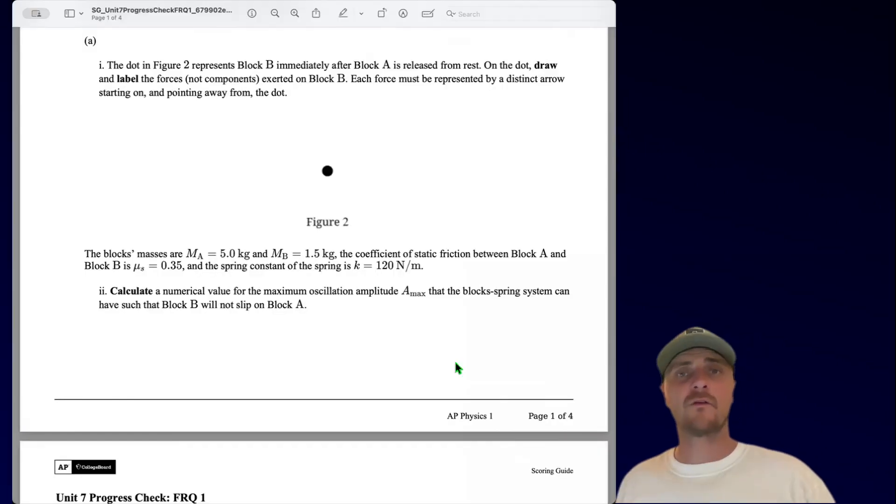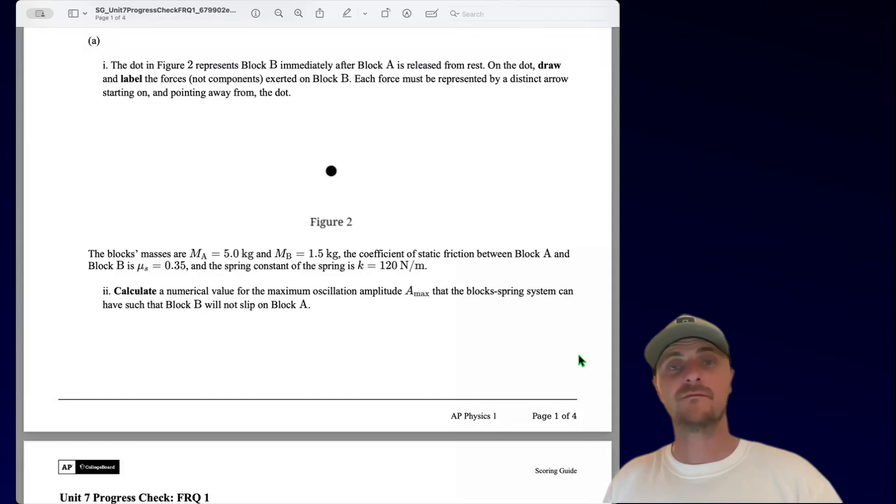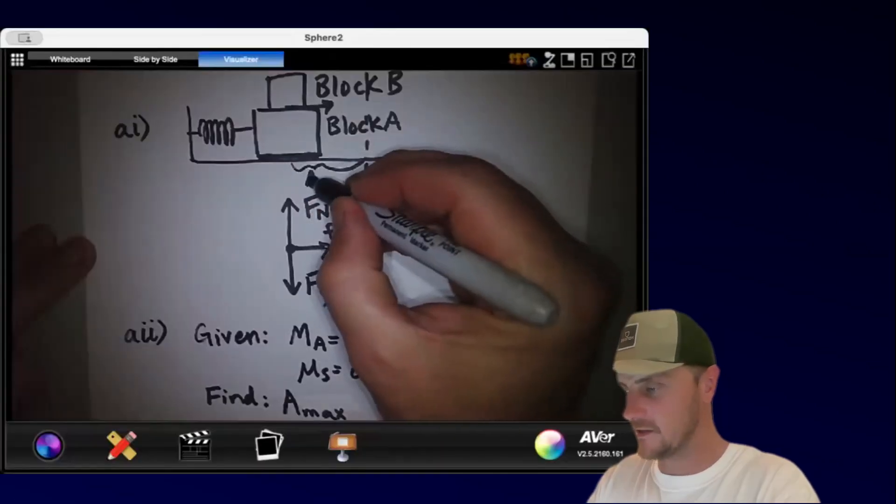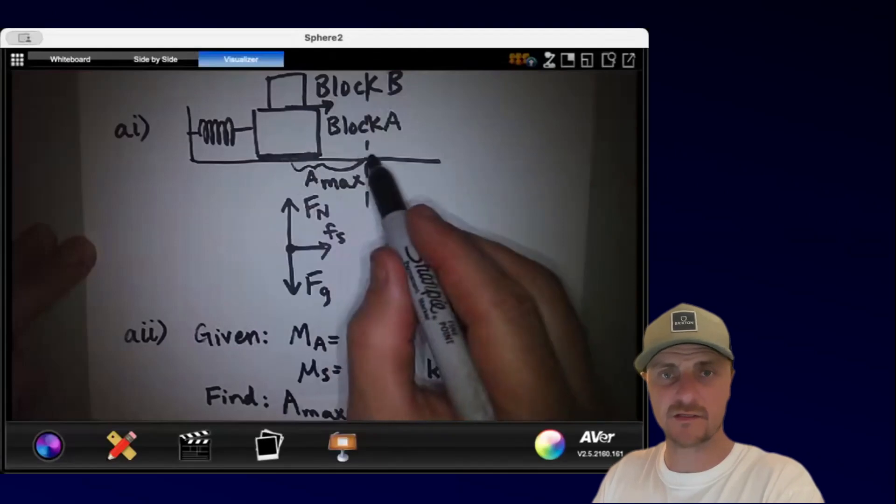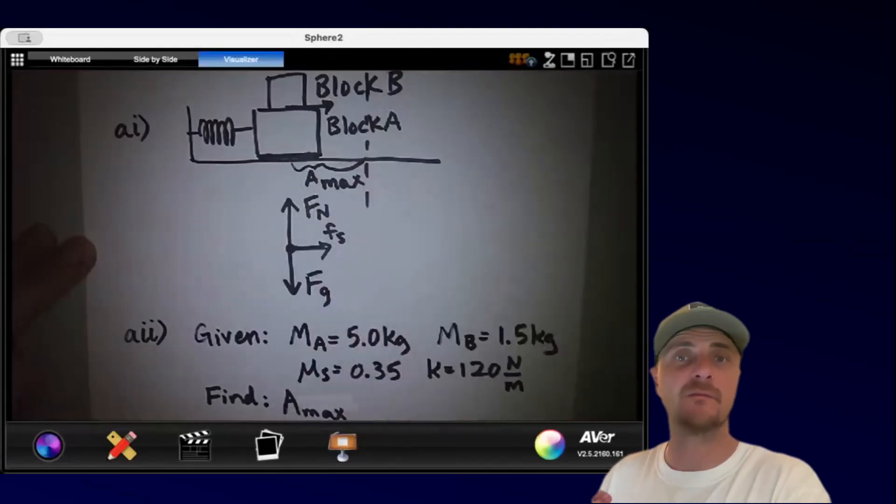Let's move on to the next part. Okay, now they're giving us some given information. We see that the masses of A are 5.0 kilograms, and mass B is 1.5 kilograms. The coefficient of static friction between block A and block B is μ_s equals 0.35, and the spring constant of the spring is k equals 120 newtons per meter. Part A2. Calculate a numerical value for the maximum oscillation amplitude A_max that the block's spring system can have such that block B will not slip on block A. All right, let's solve for the maximum amplitude.